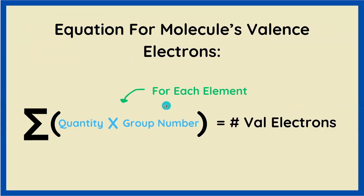In fact, we can use this equation right here to figure out the number of valence electrons for each of our molecules, where we multiply the quantity and group number for each element in the molecule, and then add them up. I know this looks confusing, but I'll show you how it works, because it's actually pretty simple.